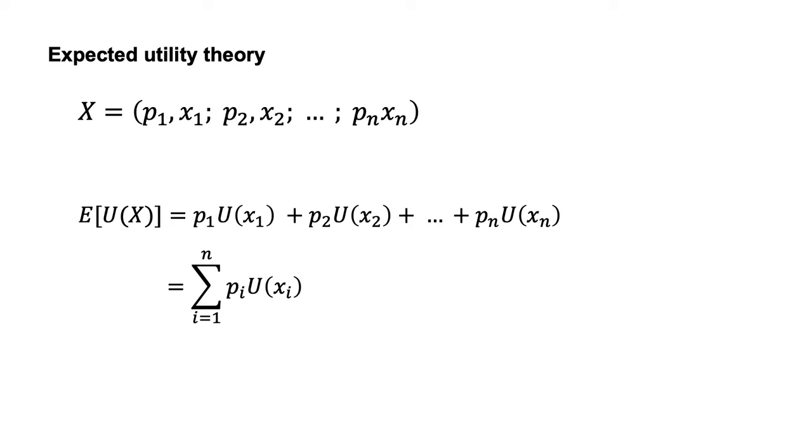Expected utility, EU of X, is calculated using the following formula. EU of X equals P1U of X1 plus P2U of X2 through to PnU of Xn.